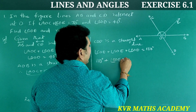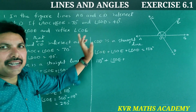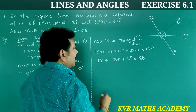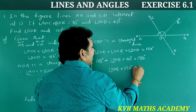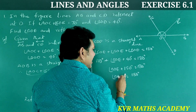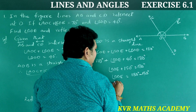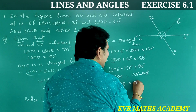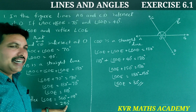Angle BOD is 40 degrees. So, 110 plus 40 is 150. Angle BOE plus 150 degrees equals 180 degrees. Therefore, angle BOE equals 180 minus 150, which is 30 degrees. So reflex angle COE is 250 degrees and angle BOE is 30 degrees.